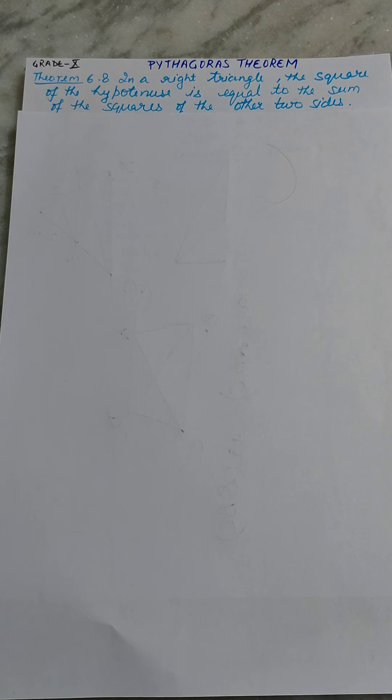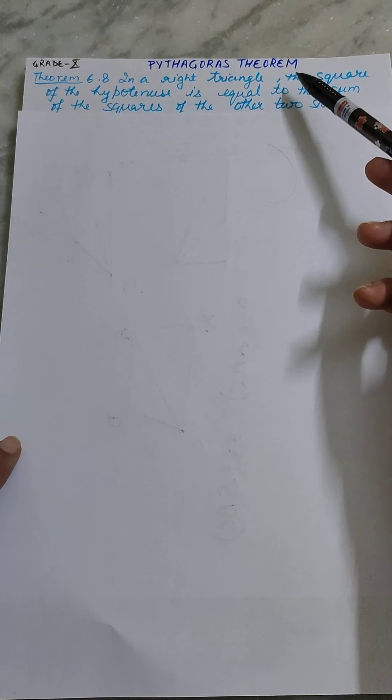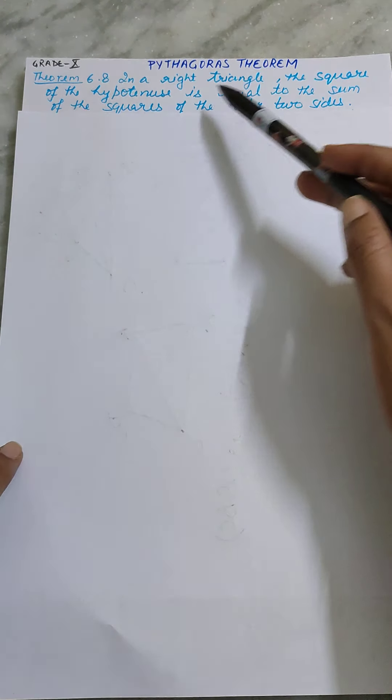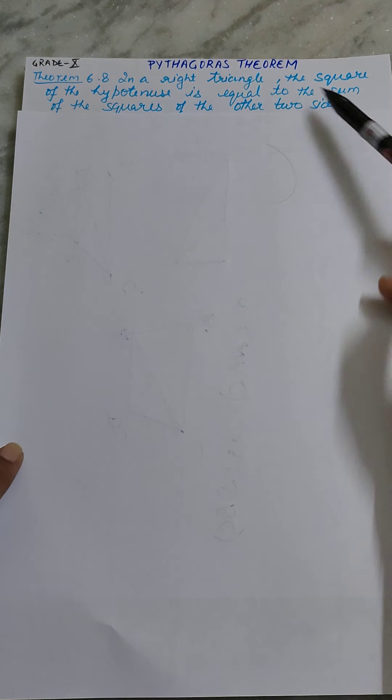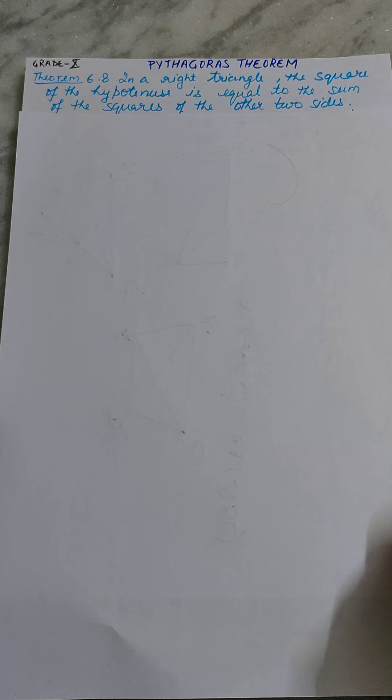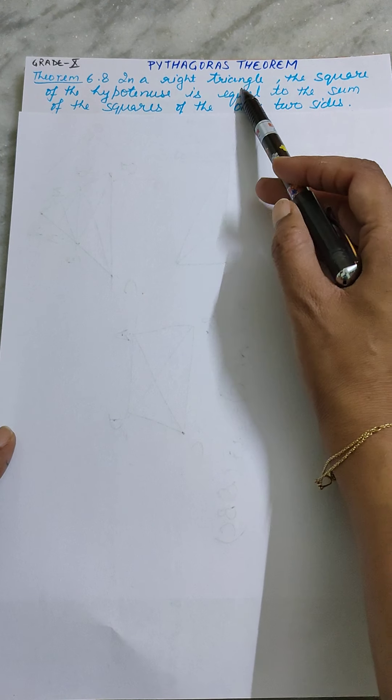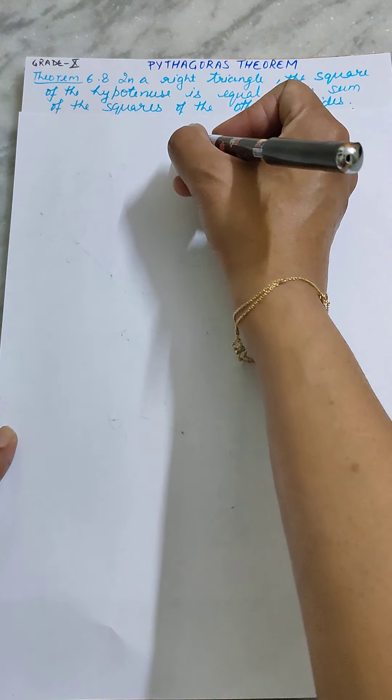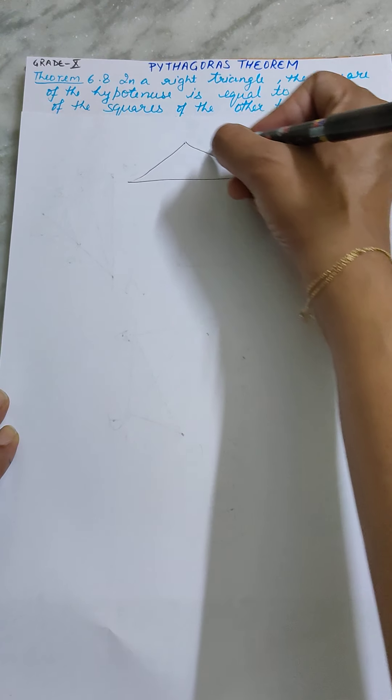Theorem 6.8, Pythagoras Theorem. In a right triangle, the square of the hypotenuse is equal to the sum of the squares of other two sides. Always remember that whenever our Pythagoras theorem starts, right-angle triangles start. So you are going to make a right-angle triangle.